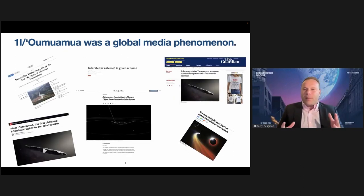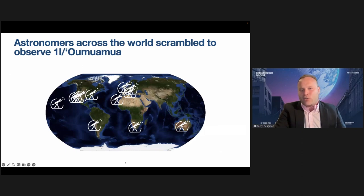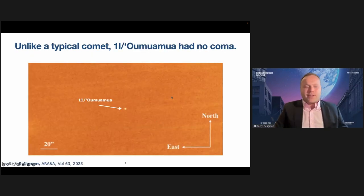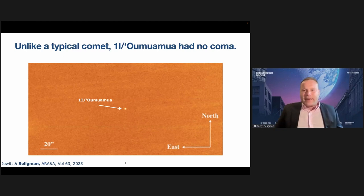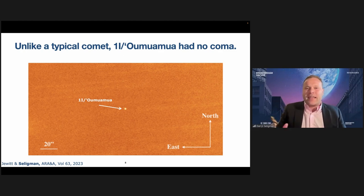Immediately, it was a global media phenomenon. These are just a few of the news articles from the weeks after the discovery. It was so exciting because for the first time, we had the chance to look at something up close that definitively formed outside of the solar system. It was also a global scramble because the object was very rapidly moving and fading. What I'm showing you here are every position on Earth that we got ground-based observations of 'Oumuamua. It was only observable really for a couple of weeks.